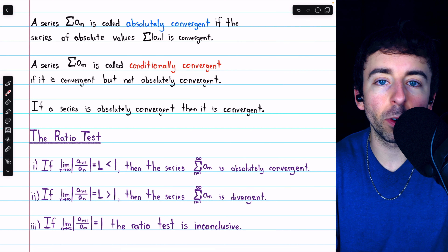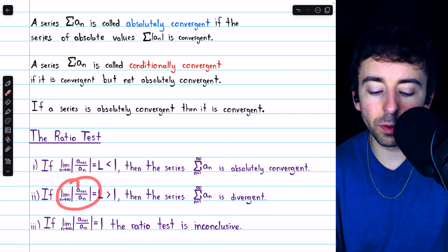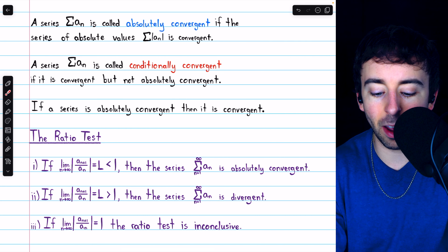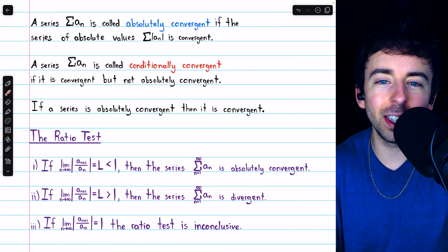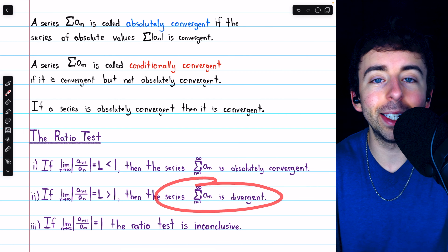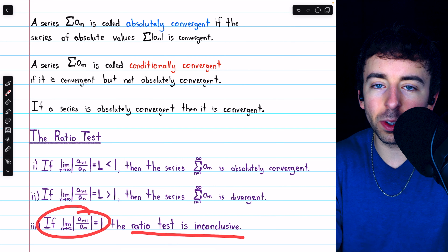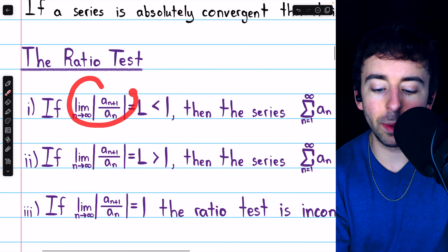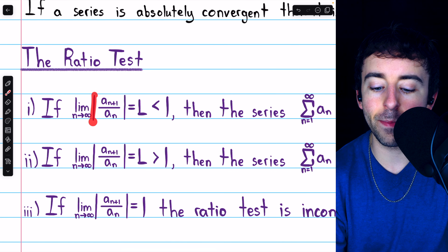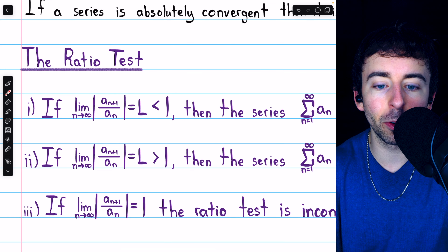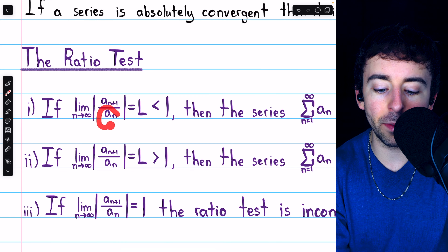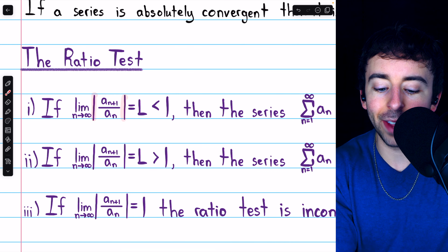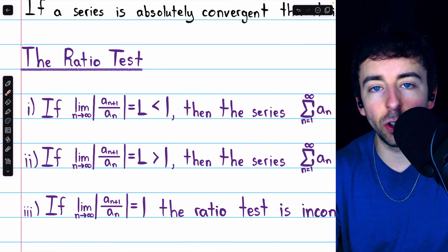On the other hand, just like with the geometric series test, if the limit of the absolute values of the ratios of consecutive terms is something greater than one, the terms are actually getting bigger, and so the series will be divergent. If the limit is equal to one, the ratio test is inconclusive, and other tests would need to be used. Make sure you notice what we're taking a limit of: the magnitude of the ratio of consecutive terms, a_(n+1) divided by a_n. We divide them, take the absolute value, and the limit of that is what we need to assess.